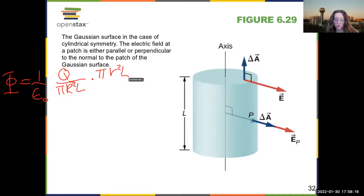And then this is going to be equal to E 2 pi L, and then times r. 2 pi L r. Okay. We get a lot of cancellations.